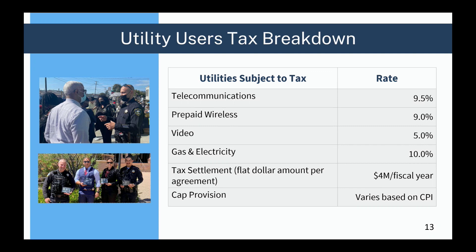We have utility user tax. Unlike property taxes and sales tax, 100% of this revenue comes to the city of Richmond. We have different rates for different types: telecommunications — landlines and cell phones — are at 9.5%; prepaid wireless at 9%; video or cable at 5%; and gas and electricity at 10%. In this revenue category, we also have a tax settlement with Chevron where they're paying $4 million per year, though that's about to run out. Chevron also pays what we call the cap provision — the max tax — which goes up or down every year based on a CPI tied to energy services cost. This year that amount is $33 million.